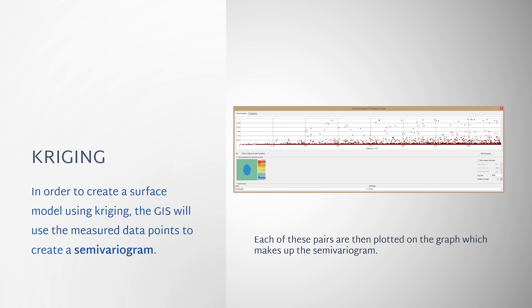The GIS will then define the surface model by finding the best fit through the points in the semi-variogram.